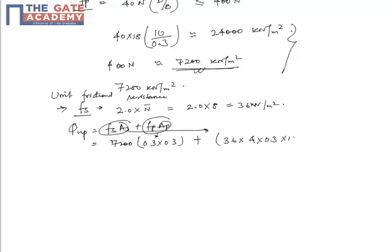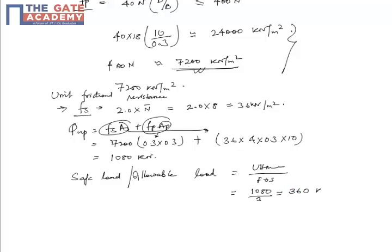And for this one, we will write 36 into 4 into 0.3 perimeter into length 10. So the value comes out to be 1,080 kN. So safe load or allowable load would be ultimate divided by factor of safety, which is 1,080 by 3, it comes out to be 360 kN.